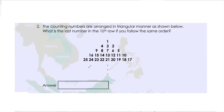Let's read the second question. The counting numbers are arranged in a triangular manner. Counting numbers are basically all positive numbers starting with 1: 1, 2, 3, 4 until infinity. They are arranged in a triangular manner as shown below. What is the last number in the 10th row if you follow the same order?